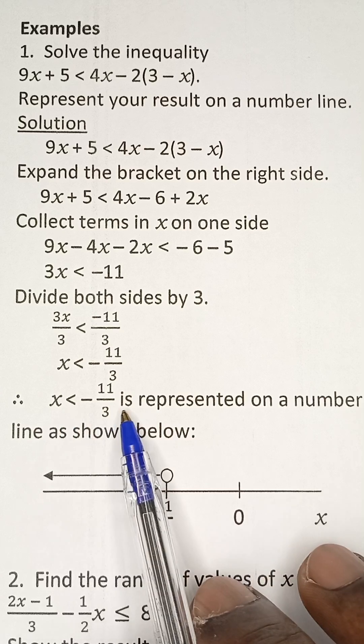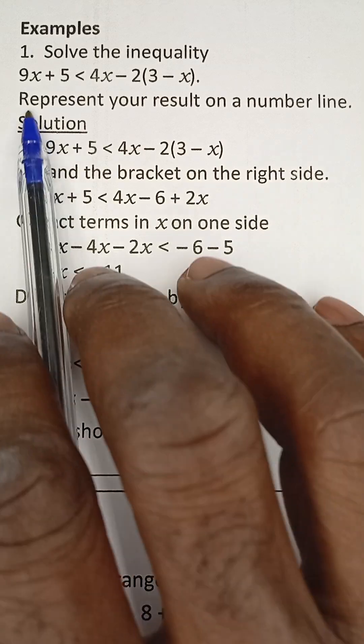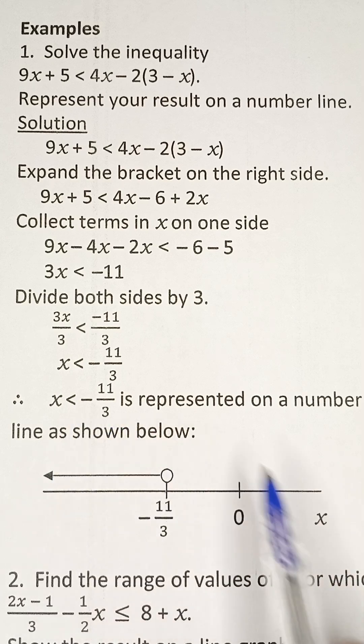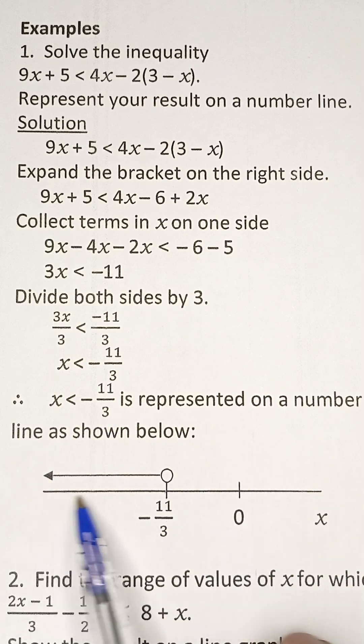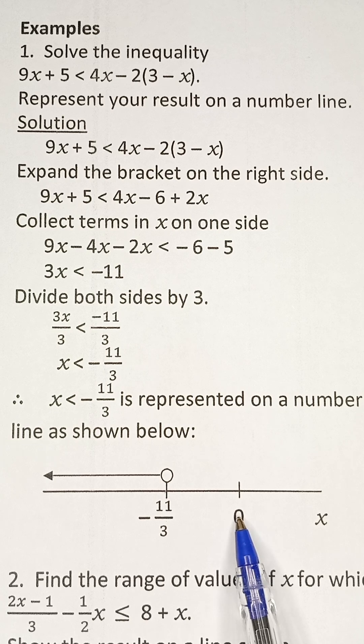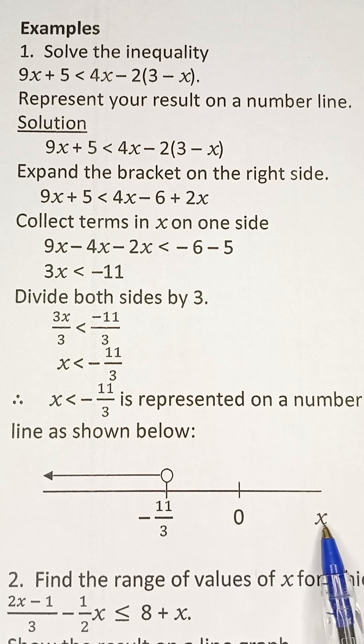So for us to represent this on a number line, as stated, I say represent your result on a number line. What we need to do is to rule a horizontal line and put 0 at a point, probably at the midpoint, and then you introduce your x, which is what we just looked for now.